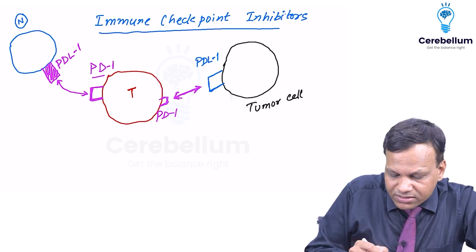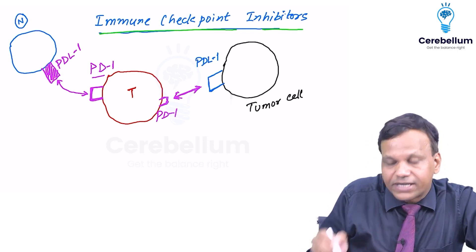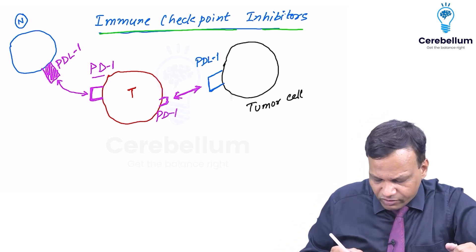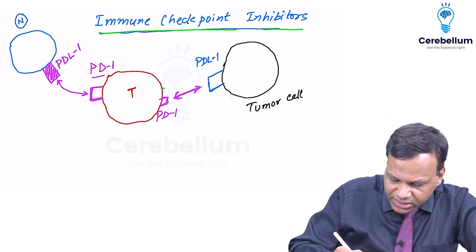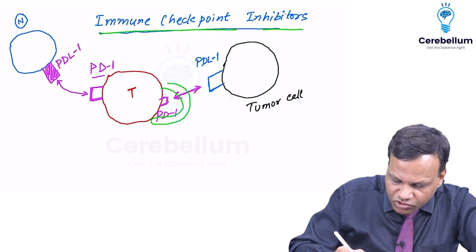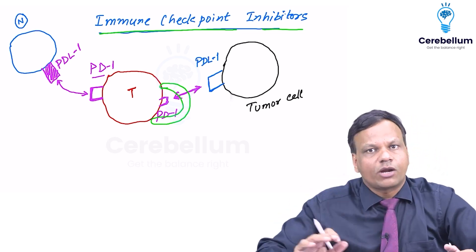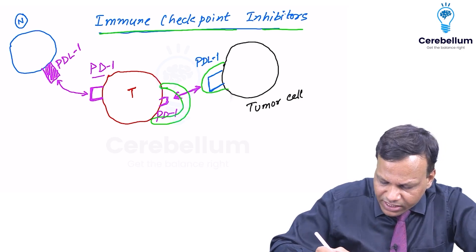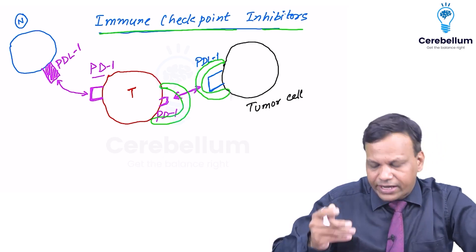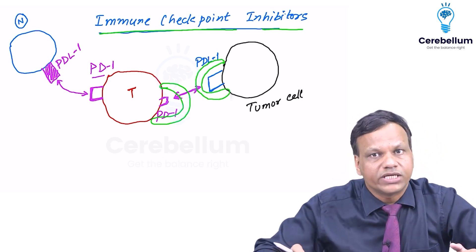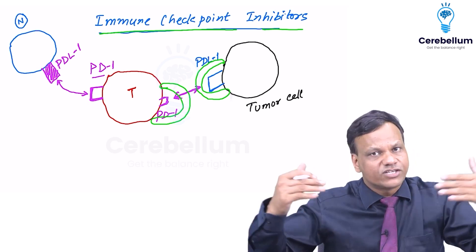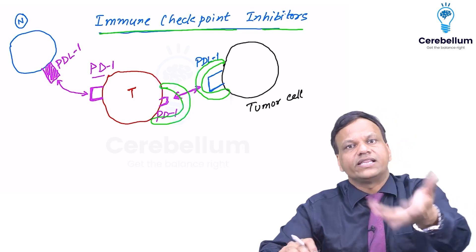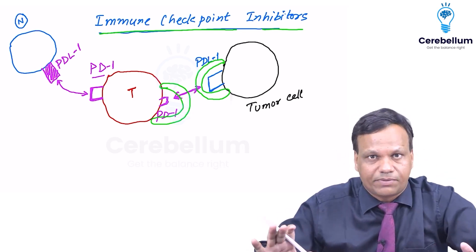If we stop this interaction — this ID interaction — then we can kill the cancer cell. That mechanism is known as immune checkpoint inhibitors. We have developed two types of drugs: one which binds to PD-1, so if a drug binds to PD-1, it will not be able to recognize the ID card. Second, we can give a drug which binds to PD-L1 — again, the ID card cannot be shown to the T cell. If we stop this interaction, the T cell cannot be inhibited, and when not inhibited, they will kill the cancer cells.